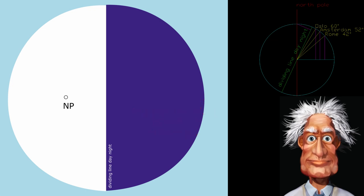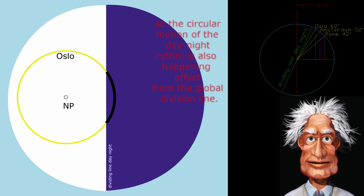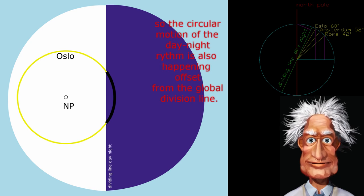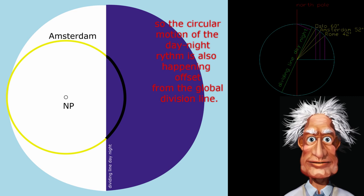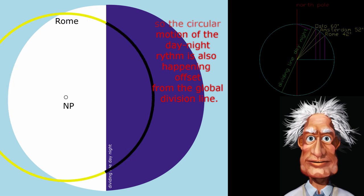In Oslo you can see that the black line is much shorter than the yellow line. The yellow line stands for the daylight. In Amsterdam the nighttime is a little bit longer and in Rome the nighttime is even longer than in Amsterdam.